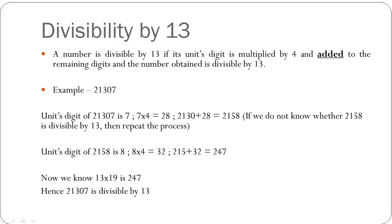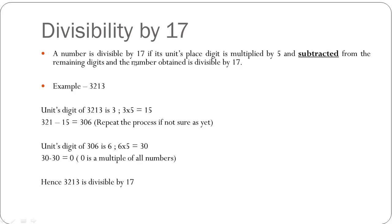Let's look at divisibility by 17. A number is divisible by 17 if its units digit is multiplied by 5 and subtracted from the remaining digits, and the number obtained is divisible by 17. Are you noticing a pattern developing? It's just that the number to be multiplied changes and whether you add or subtract changes — the rest remains the same for numbers like 7, 13, 17, and even 19 that we will see later.